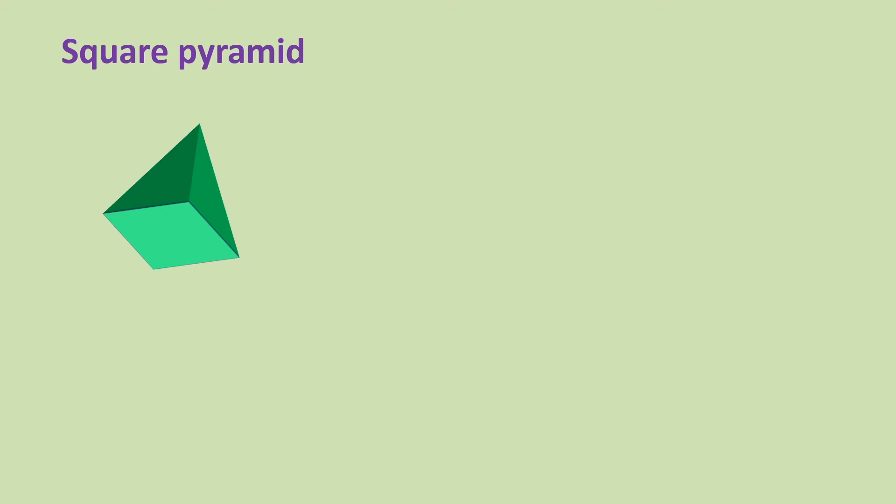Let's learn a few less common 3D shapes. Square pyramid has no curved face, but it has five faces which includes four triangular faces and one square which is at the base.